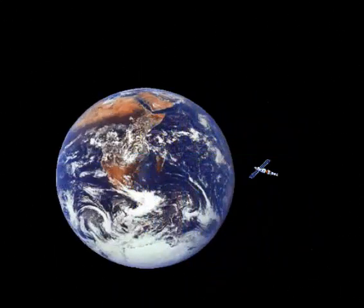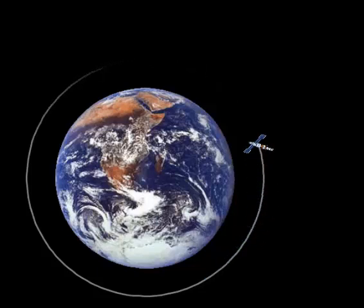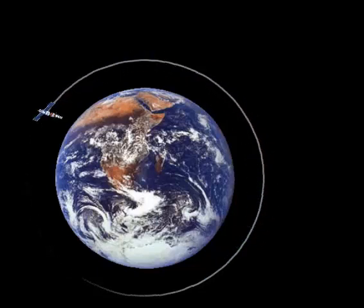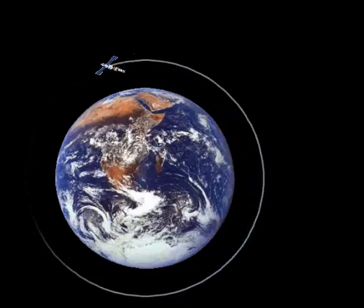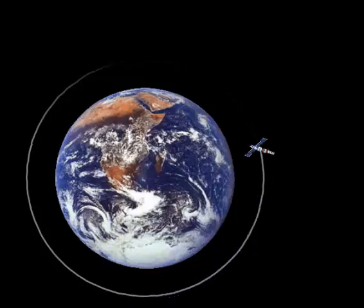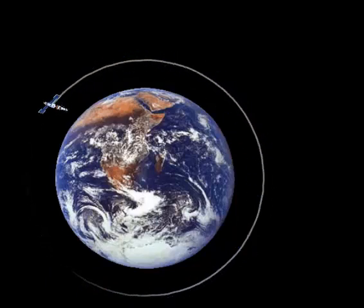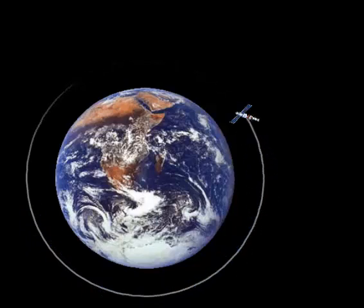The simulation shows a satellite revolving around the Earth. We observe that the path is circular. Since it is moving in a circular path, centripetal force must be provided to make it move this way. The gravitational pull on the satellite by the Earth provides the centripetal force.